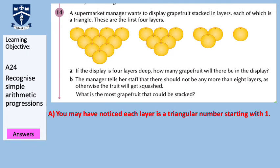For part A, you may have noticed that each layer is a triangular number starting with one. If the display is four layers deep, you would just add the first four triangle numbers together: 1 + 3 + 6 + 10 = 20. If you counted each grapefruit on screen — 1, then 3, then 6, then 10 — added all those up, you would get 20.